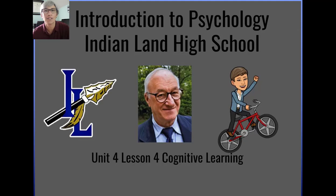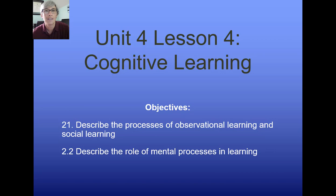Welcome to Unit 4, Lesson 4 - Cognitive Learning. Up to this point, we've really discussed mainly the behaviorist perspective when it comes to learning, that our behavior will equal certain consequences. There are theorists who say not everything is learned by getting rewards and punishments - that there are some things we just pick up on our own and that we learn by watching others. We'll discuss the process of observational learning, social learning, and what our mental processes are doing when we're learning new material.